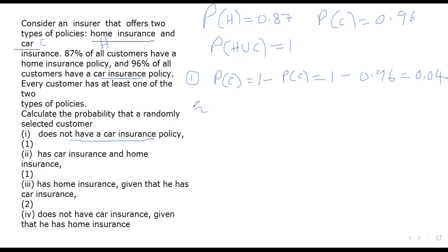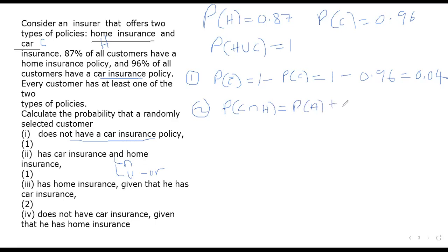In part two, what is the probability that one has both car and home insurance? 'And' means intersection. So find P(C∩H). We use the formula: P(C∩H) = P(C) + P(H) minus P(C∪H). The probability of C is 0.96, probability of H is 0.87, and the union is 1.